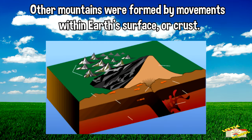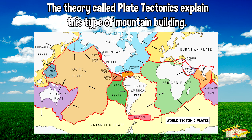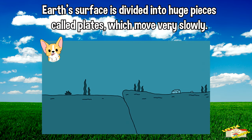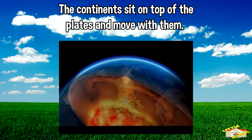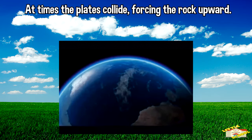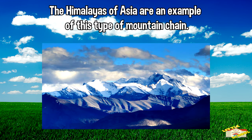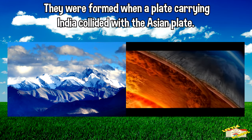Other mountains were formed by movements within the earth's surface, or crust. The theory called plate tectonics explains this type of mountain building. The earth's surface is divided into huge pieces called plates, which move very slowly. The continents sit on top of the plates and move with them. At times, the plates collide, forcing the rock upward. The Himalayas of Asia are an example of this type of mountain chain — they were formed when a plate carrying India collided with the Asian plate.